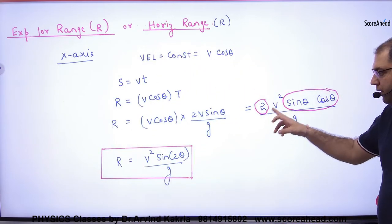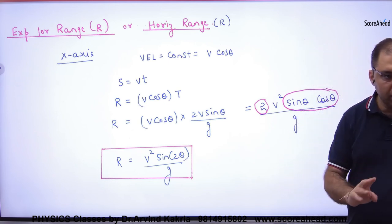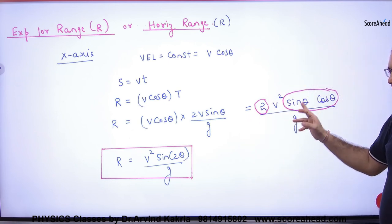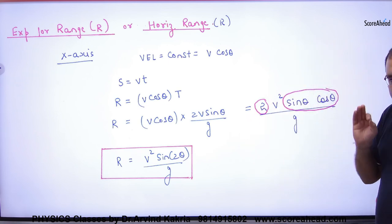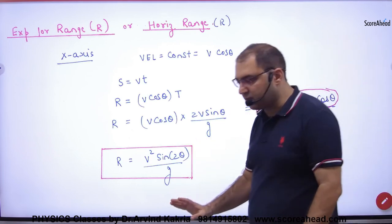That 2 into sin theta into cos theta is always equal to sin of 2 theta. So remember, 2 sin theta cos theta can be written as sin 2 theta. So this is the expression you have for range.